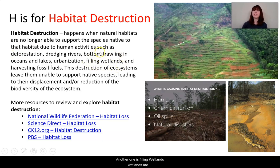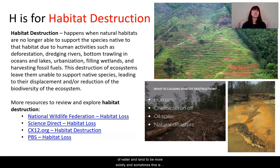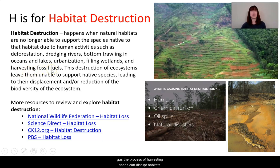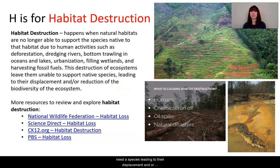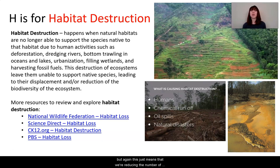Another form of habitat destruction is filling wetlands — ecosystems such as marshes, swamps, and bogs — where humans change that ecosystem from a mixture of water and land to more solid land, sometimes to build in those habitats. Finally, harvesting fossil fuels like oil and natural gas can also disrupt habitats. This destruction of ecosystems leaves them unable to support native species, leading to displacement and reduction of the biodiversity of the ecosystem — reducing the number of types of species that can live there.